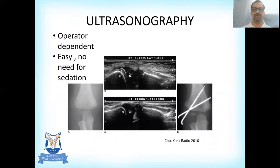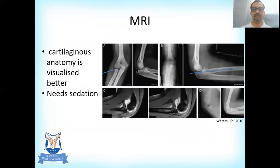Ultrasonography is one modality to evaluate these injuries, but it is operator dependent and requires training. It has the advantage of not needing sedation. As cited in a paper published in a Korean journal, a lateral condyle fracture was picked up on sonography in a child less than 2 years of age. MRI is the modality of choice as it visualizes cartilaginous anatomy better, though it does require sedation and anesthesia.